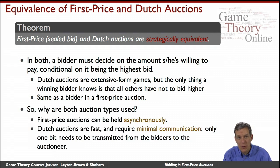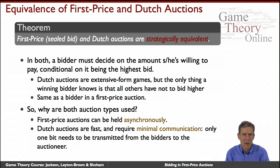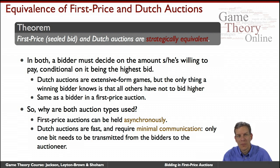Why do we see both kinds of auctions used in practice? One nice thing about first price sealed-bid auctions is you can have people bid asynchronously. Procurement auctions are often done this way — the government might say, bid on a contract, put your bid in an envelope and send it to us. In procurement auctions where you're selling to the government, the lowest bid typically wins, and those can be held asynchronously with bids mailed in.